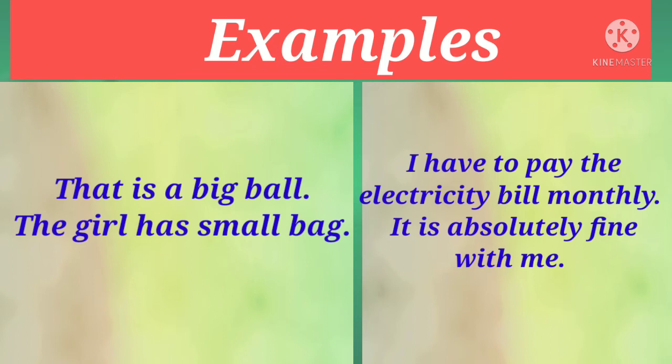Let's take examples of adverb. 'I have to pay the electricity bill monthly.' Here the verb is pay — और pay को describe कौन कर रहा है? कब पे करना है? Monthly पे करना है। It means it is defining the verb, that's why monthly is an adverb here. 'It is absolutely fine with me' — absolutely is also an adverb.